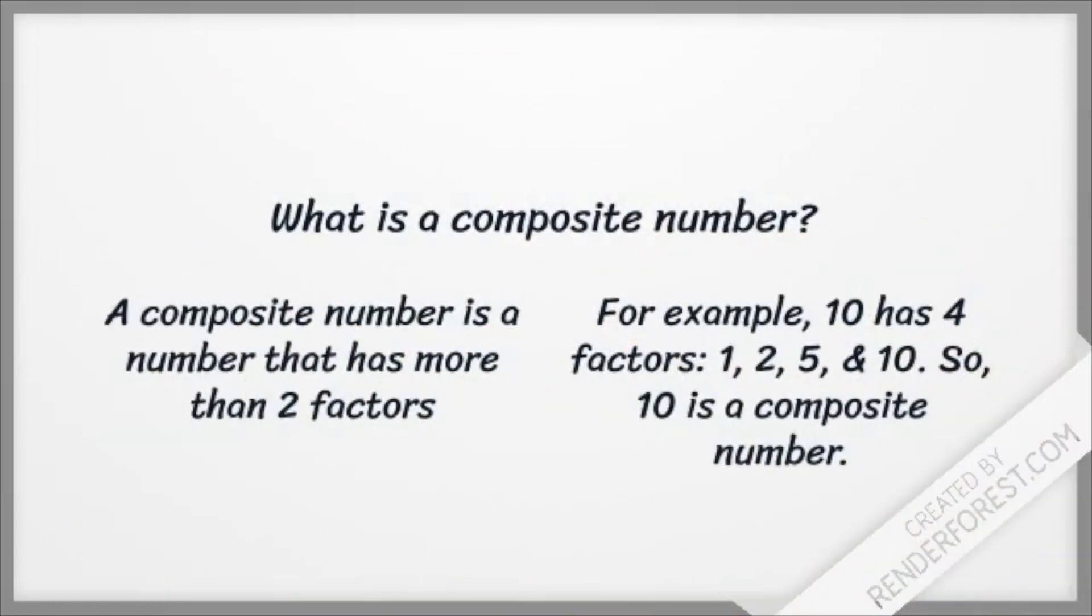What is a composite number? A composite number is a number that has more than 2 factors. For example, 10 has 4 factors: 1, 2, 5, and 10. So, 10 is a composite number.